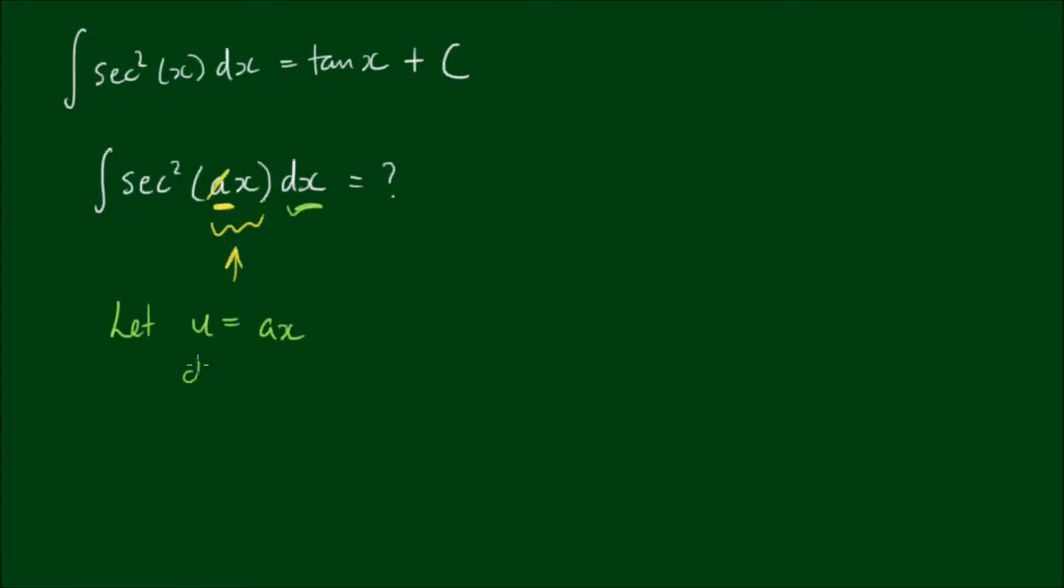If we take the derivative of u with respect to x, we simply get a. And we can rearrange this to du equals a by dx. And we can rearrange this again so that dx is equal to 1 on a by du. So that's simply dividing both sides by a.